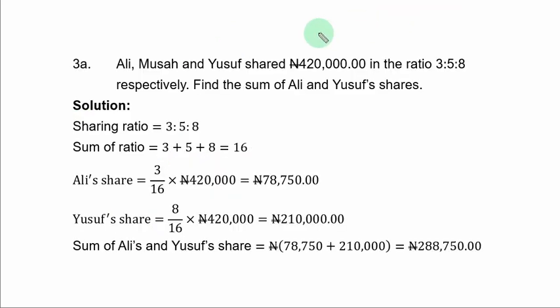Question 3A: Ali, Musa, and Yusuf shared 420,000 Naira in the ratio 3 to 5 to 8 respectively. Find the sum of Ali and Yusuf shares. To get the sum, you need to get Ali's share and Yusuf share. From the question, ratio 3 is for Ali, ratio 8 is for Yusuf. So this is the sharing ratio. The sum of ratio is needed, that is 16.